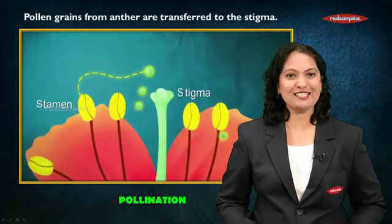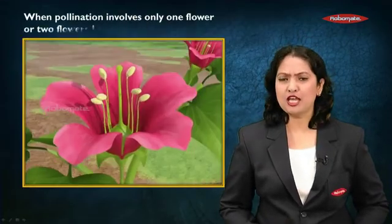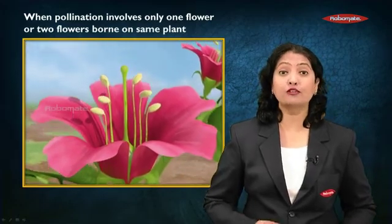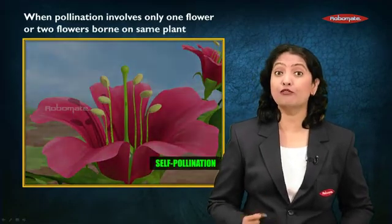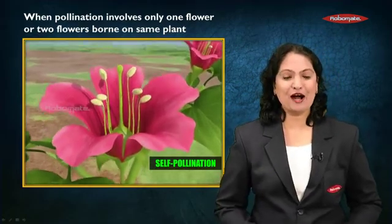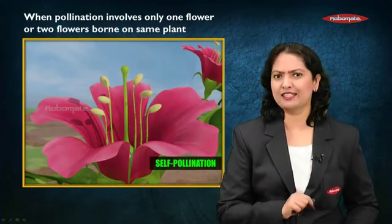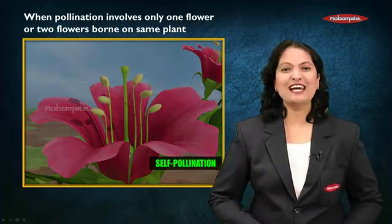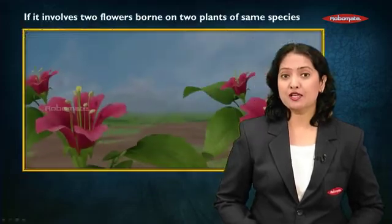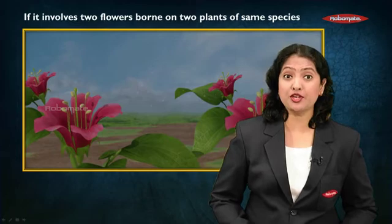During pollination, if the pollen grains from the anther of a flower fall on the stigma of the same flower, or fall on the stigma of some other flower but on the same parent plant, it is called as self-pollination.